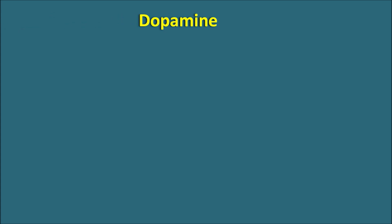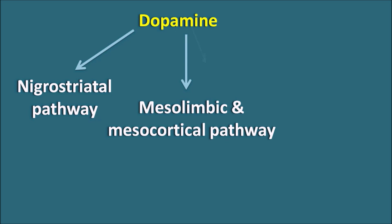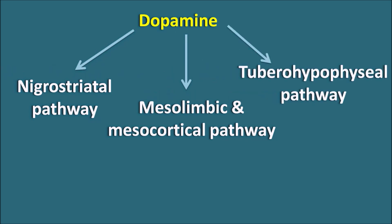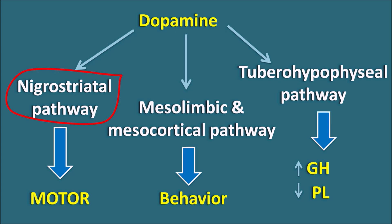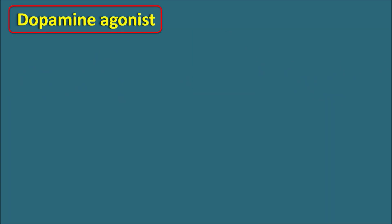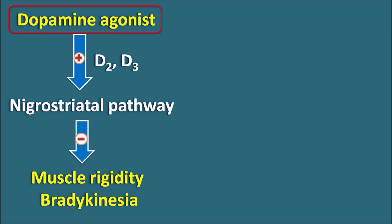All these drugs increase dopaminergic transmission. Dopamine can act on three important pathways: the nigrostriatal pathway, the mesolimbic and mesocortical pathway, and the tuberoinfundibular pathway. By acting on the nigrostriatal pathway, dopamine is responsible for motor functions of the body. Action on the mesolimbic and mesocortical pathway controls behavior, and the tuberoinfundibular pathway is responsible for increased growth hormone release and decreased prolactin release. Dopamine receptor agonists mainly act on D2 and D3 receptors, thereby stimulating the nigrostriatal pathway to improve motor functions and reduce Parkinson's symptoms like muscle rigidity and bradykinesia.